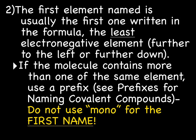So when you're naming, just like when you're naming ionic compounds, the first element named is usually the first one written in the formula, the least electronegative element—further to the left or further down. If the molecule contains more than one of the same element, use a prefix. And you're going to find the prefixes on the back of your periodic table with the polyatomic ion chart, titled prefixes for naming covalent compounds. Unless there's only one of the same element in the first name, you do not use mono. Do not use mono for the first name.